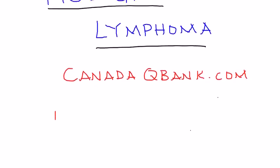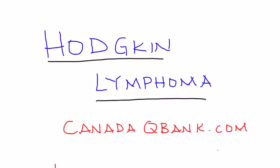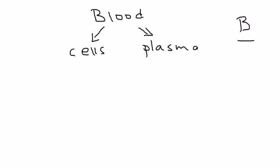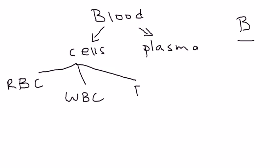Before we get into symptoms, let's explain what's actually happening. To do that, we need to talk a little bit about blood, because we're going to concentrate on a specific type of blood cell called a B cell. Blood is broken up into cells and plasma, and the three big blood cells are red blood cells, white blood cells, and platelets.